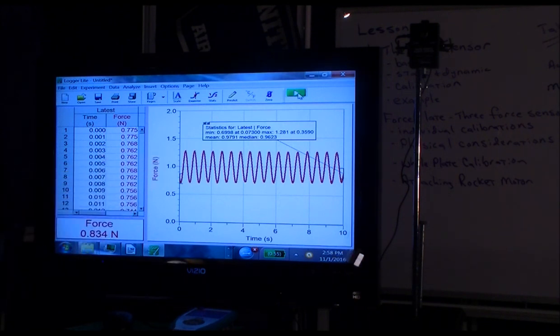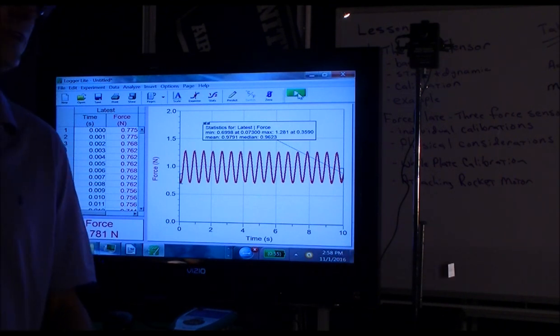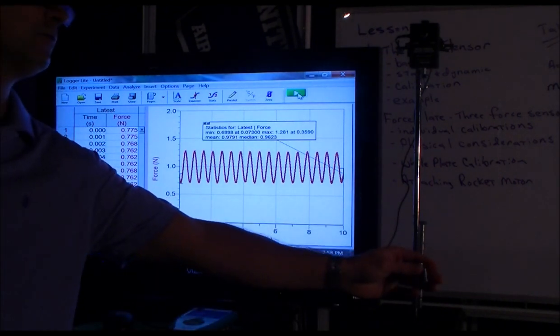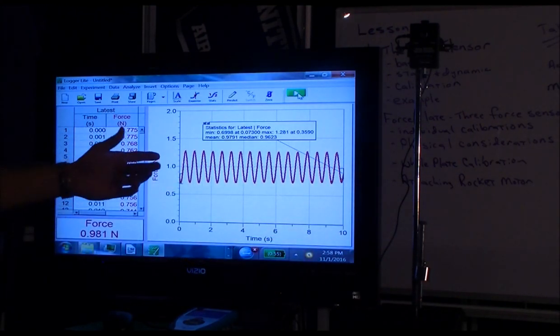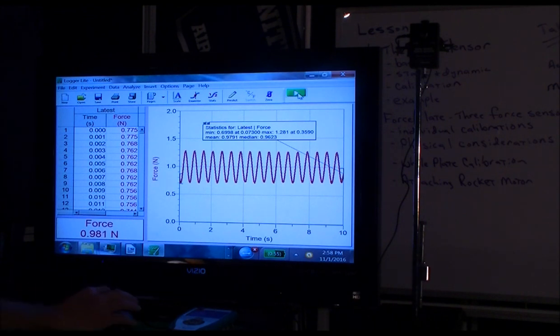So this is one of the great advantages of the dual range force sensors. It doesn't just measure static forces like a bathroom scale, but it can measure dynamic forces that are changing at a rate and that it can sample them at 1,000 samples per second.